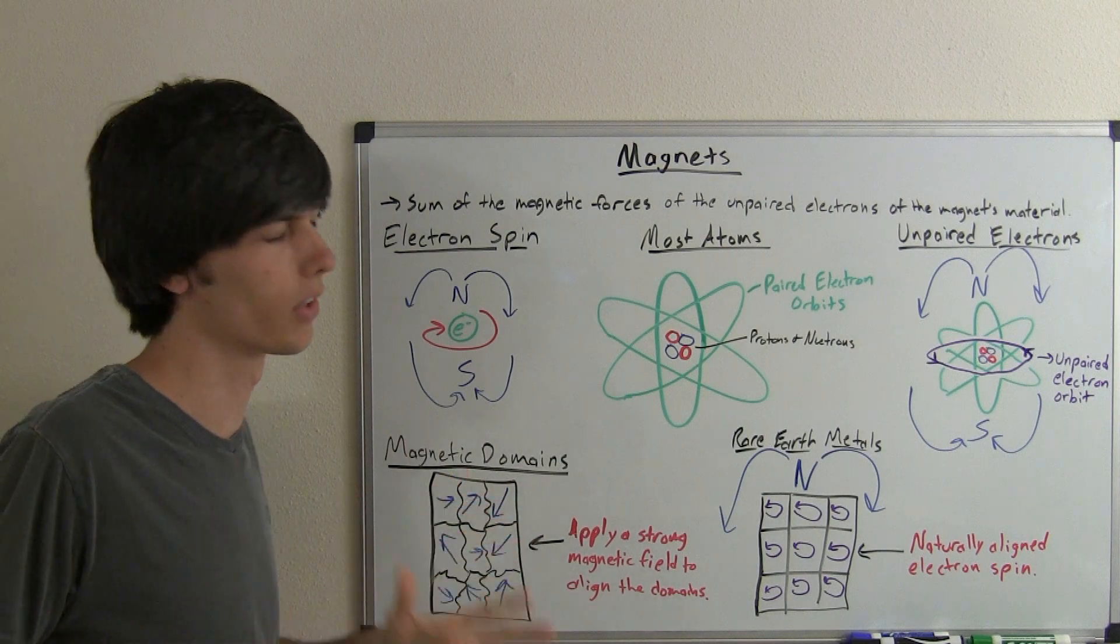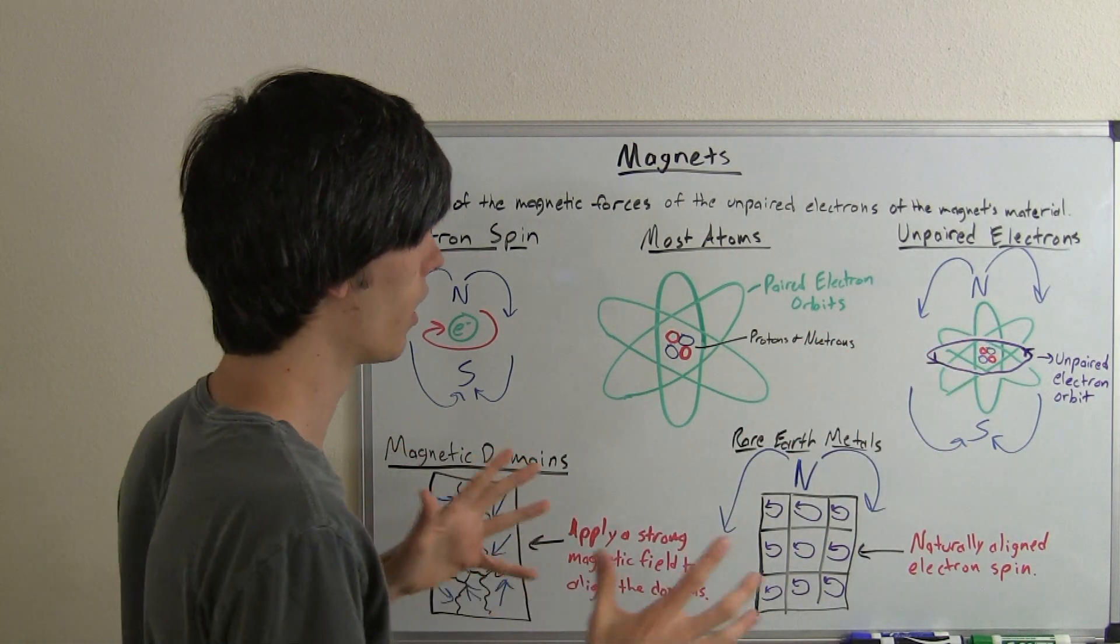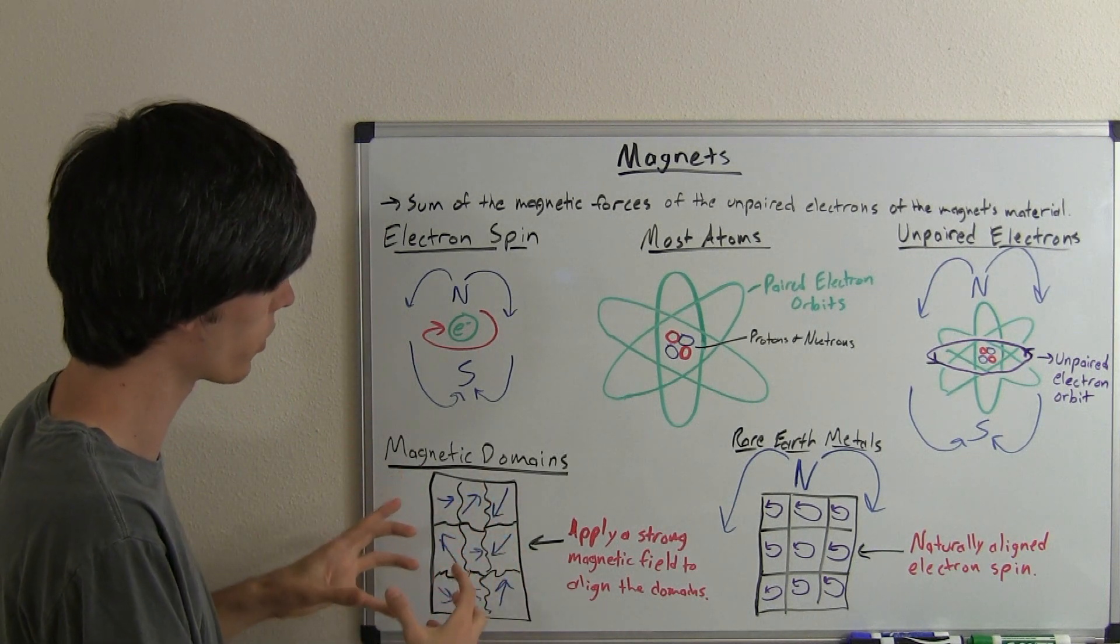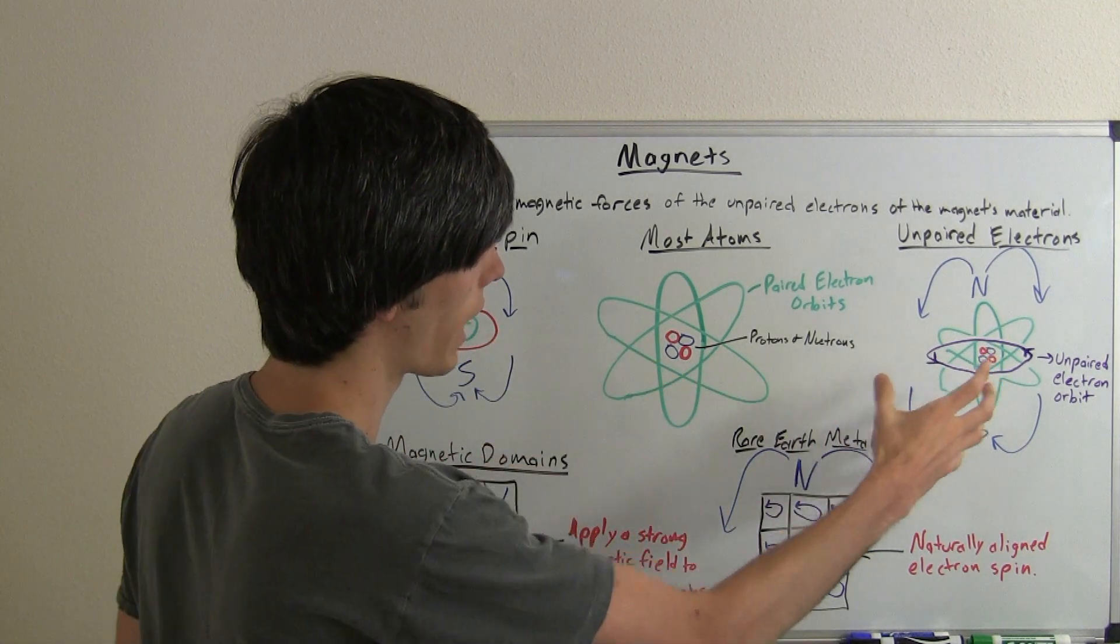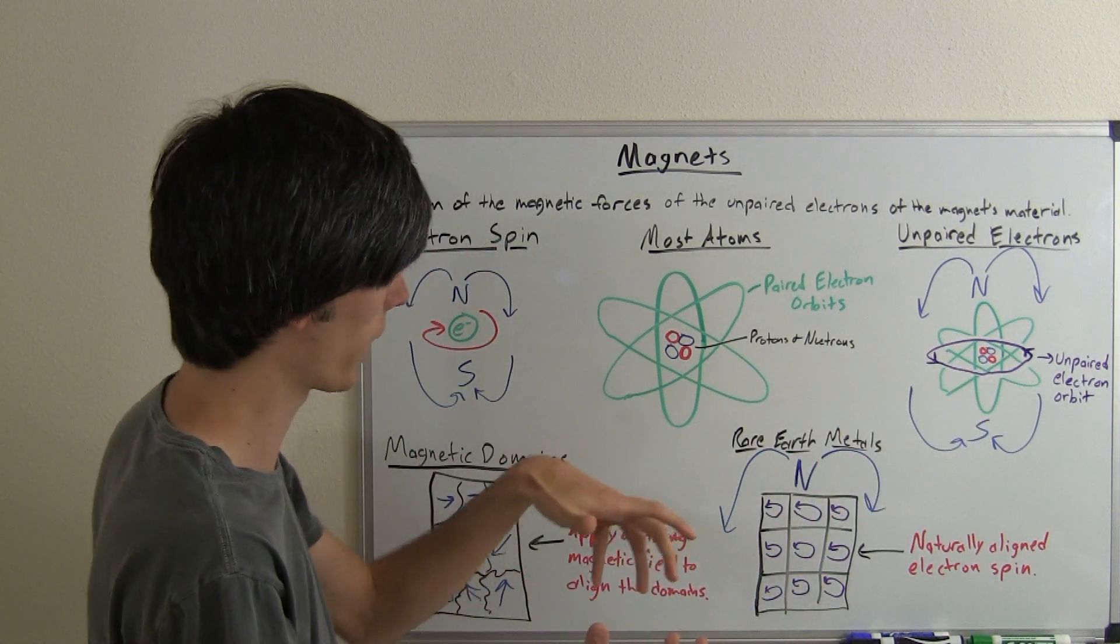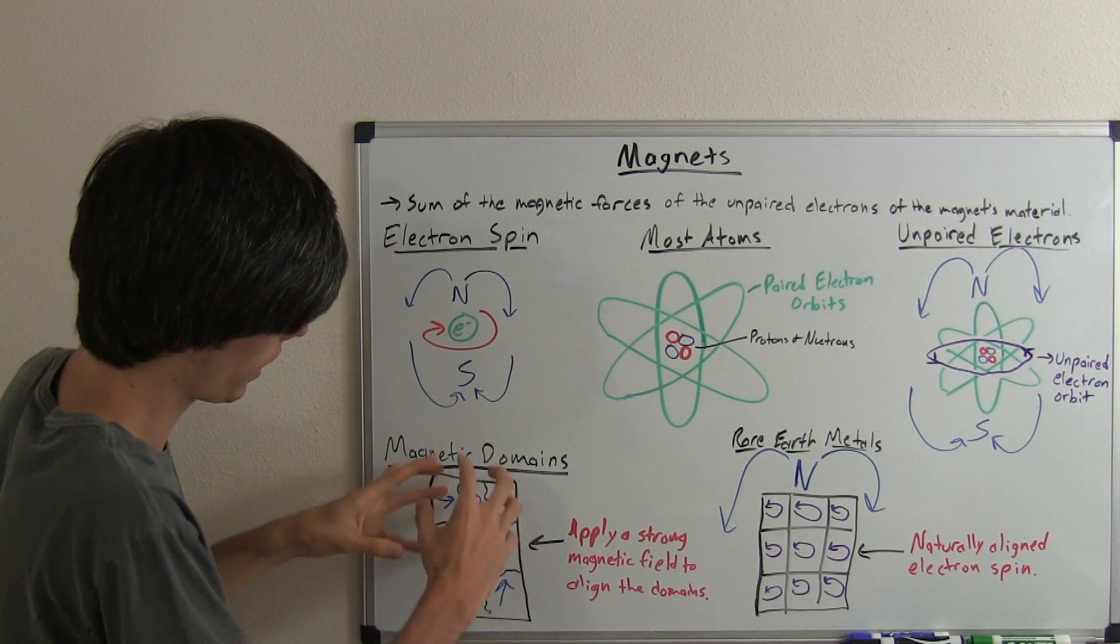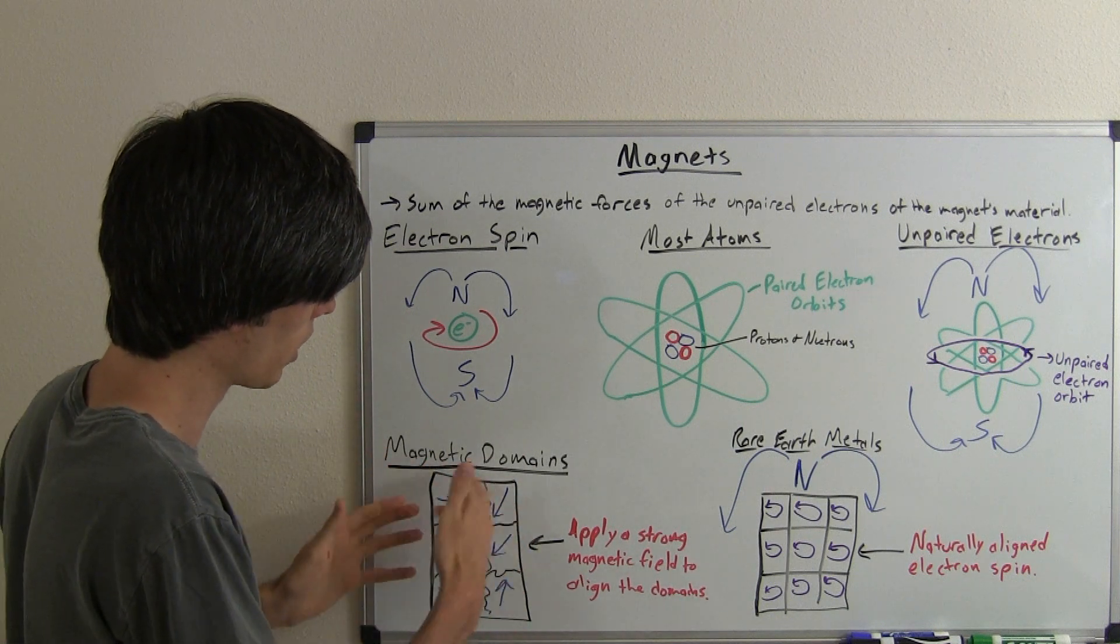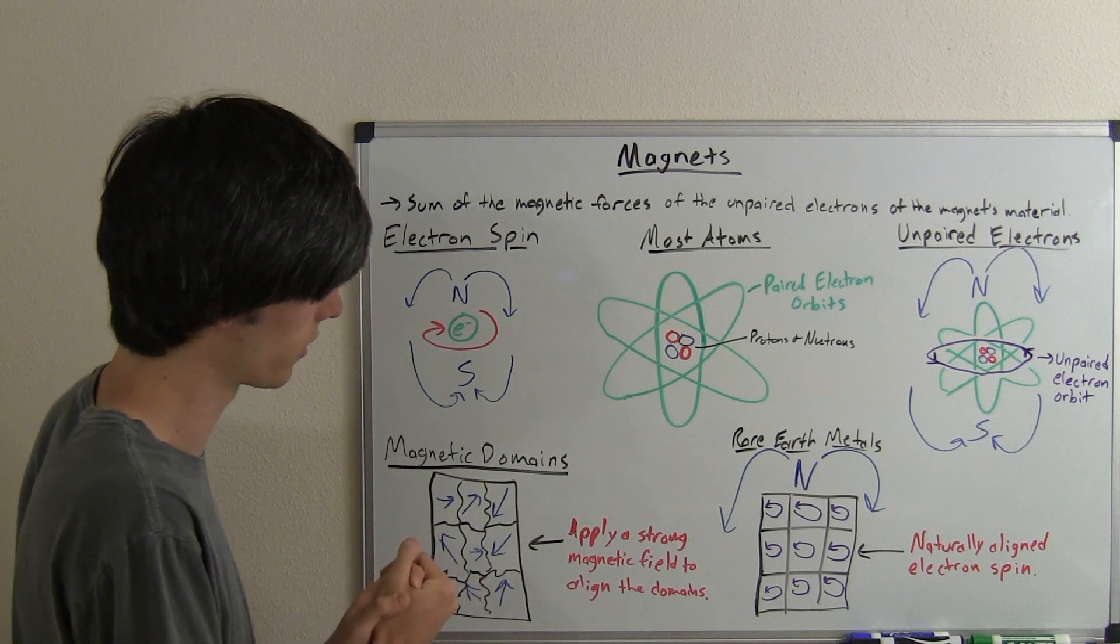So what happens is with materials that have these unpaired electrons within their elements there's going to be these magnetic domains and those magnetic domains are areas where all of the atoms have aligned their magnetic fields. But because there's a bunch of different ones it all pretty much cancels out and so this material won't have any magnetic property. So this could be something like iron you might see something like this.